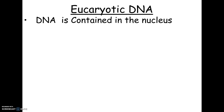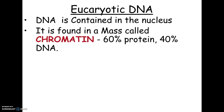We're going to focus on eukaryotic cells. Eukaryotic cells have their DNA in the nucleus, typically found in a mass called chromatin. Chromatin is about 60% protein and only about 40% DNA. When scientists first started studying heredity in the early 1900s, they thought the protein was the most important thing, because chromatin inside the nucleus was more protein than DNA. We now know it's the DNA that's the important part.